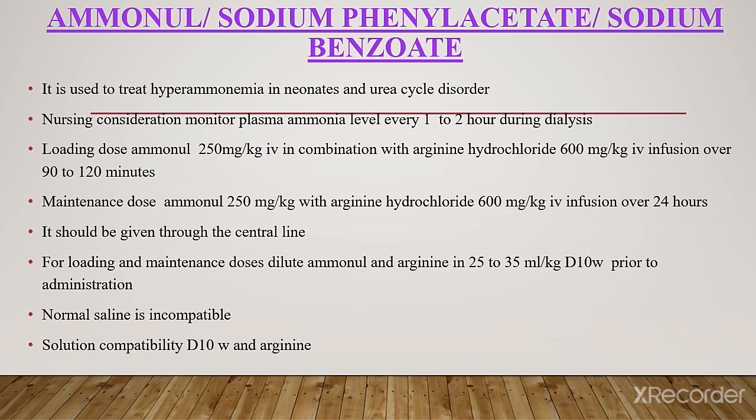Monitor plasma ammonia level every 1–2 hours during dialysis. Loading dose of aminol 250 mg per kg IV in combination with arginine hydrochloride 600 mg per kg IV infusion over 90–120 minutes. Maintenance dose of aminol 250 mg per kg with arginine hydrochloride 600 mg per kg IV infusion over 24 hours.